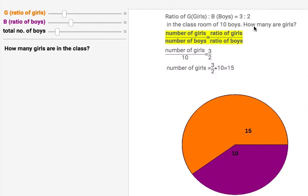How many are girls? You can use this proportion: number of girls divided by number of boys equals ratio of girls divided by ratio of boys. Using this proportional formula to calculate, the number of girls is 15. This picture illustrates how that proportion works.